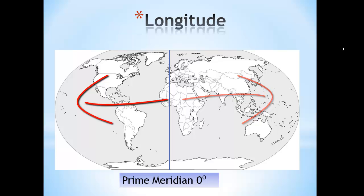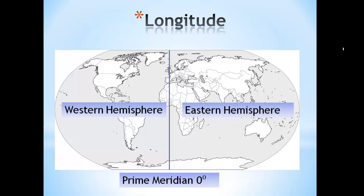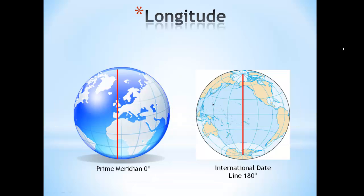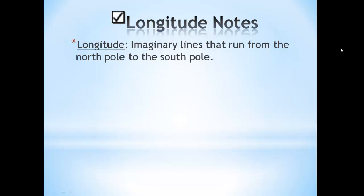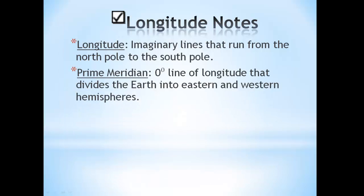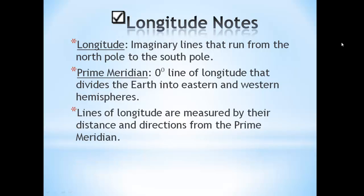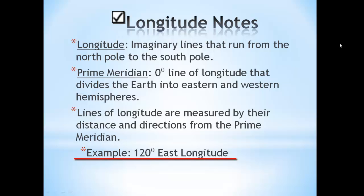The prime meridian divides the world into western and eastern hemispheres. Opposite of the prime meridian on the globe is the 180-degree line. Lines of longitude do not go all the way around the world like latitude does. So on the opposite side of the prime meridian, we have what is called the international date line, exactly 180 degrees around the globe. Let's review our longitude notes: longitude lines are imaginary lines that run from the north pole to the south pole. The prime meridian is the zero-degree line of longitude that divides the Earth into eastern and western hemispheres. Lines of longitude are measured by their distance and direction from the prime meridian. An example of a longitude coordinate would be 120 degrees east longitude.